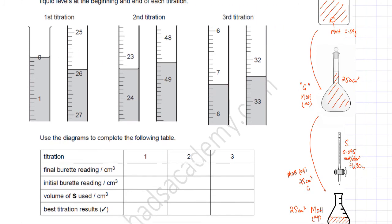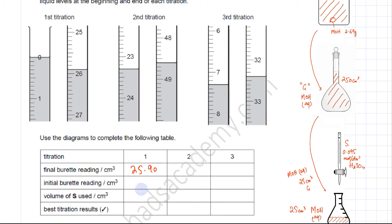For titration 1: the initial burette reading is 0.00 cm³ and the final reading is 25.90 cm³. Burette readings are taken to two decimal places for accuracy. The volume of S added is therefore 25.90 cm³.